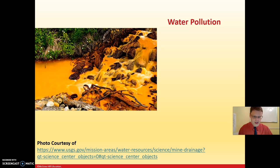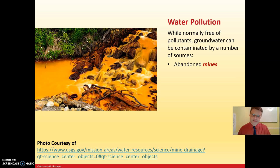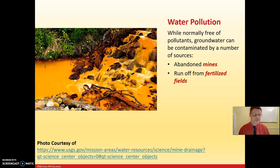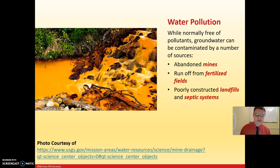One example of water pollution is acid mine drainage — if you Google it, you'll find many orange-colored images. Sources of water pollution include abandoned mines, runoff from fertilized fields — fertilizers with nitrogen and phosphorus cause algae blooms, as I saw near my college dorm — and also poorly constructed landfills and septic systems that leach contaminants into groundwater.